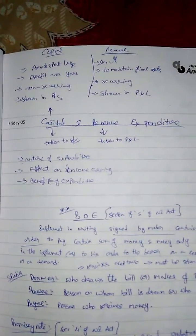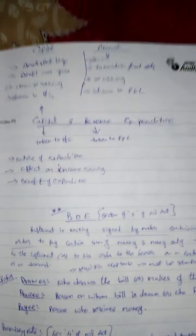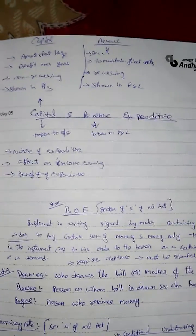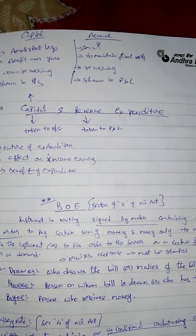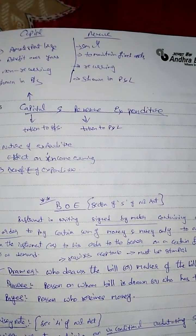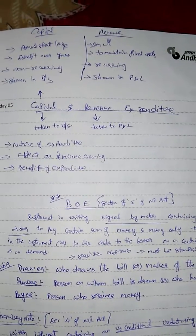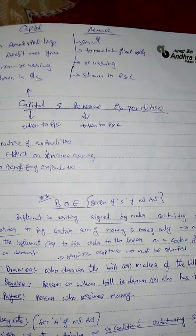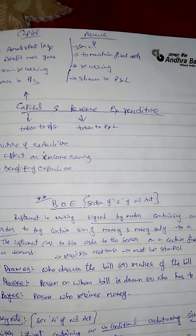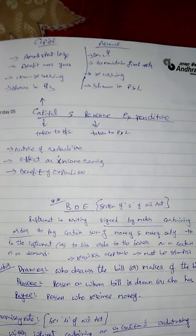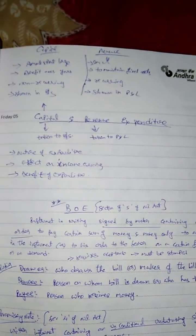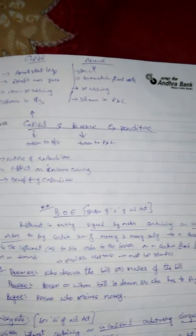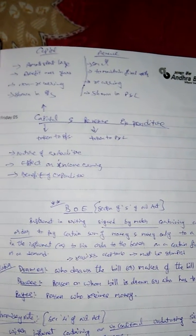After BRS, another small topic is capital and revenue expenditure. Basically, expenditure or income will be classified into two types: capital and revenue. Under this, we have capital expenditure, capital receipts, revenue expenditure, and revenue receipts. Now let's look at what capital expenditure and revenue expenditure are, and how to classify them.